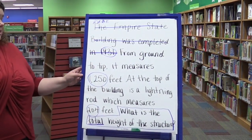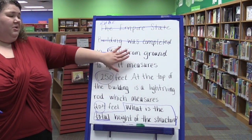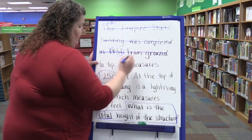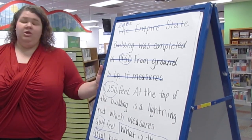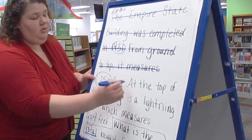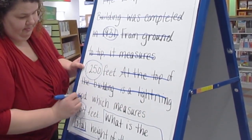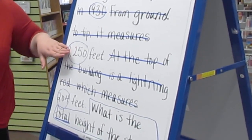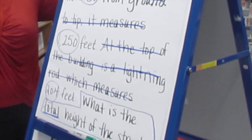From the ground to tip measures 1250 feet — this part's important but this context doesn't help me pull out the problem, so I can also eliminate this. At the top of the building is a lightning rod which measures 204 feet. I need the 204 feet, but it doesn't matter that the lightning rod is at the top. So now I have 1250 plus 204 feet, and that's how I solve my problem.